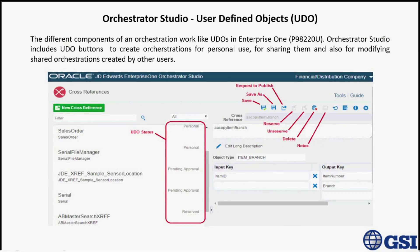The components of an orchestration work like user-defined objects. You can save and administrate them in JD Edwards Enterprise One. Orchestrator Studio includes buttons to create orchestrations for personal use, for sharing them, and also for modifying shared orchestrations created by other users.